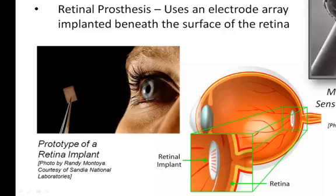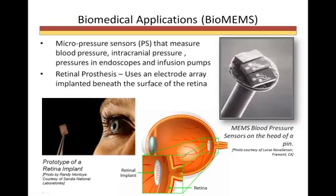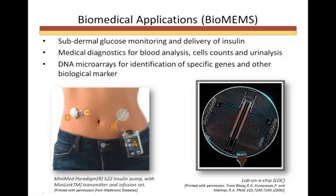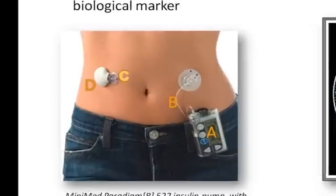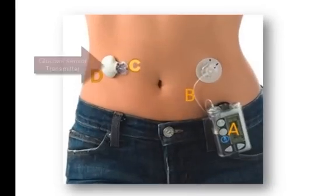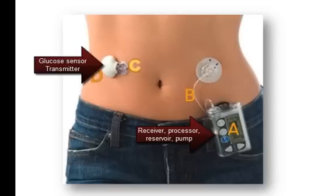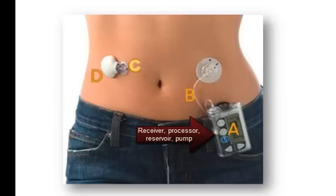This array works in conjunction with an external camera on the glasses of the patient and a transmitter and receiver. Other biomedical devices include monitoring systems that diabetics can wear 24-7 to monitor and correct their glucose levels. Such devices include a glucose sensor with transmitter, a receiver, and a computer that calculates the glucose level and determines the amount of insulin needed. If insulin is needed, a microsized pump administers the correct amount to the patient via the cannula.